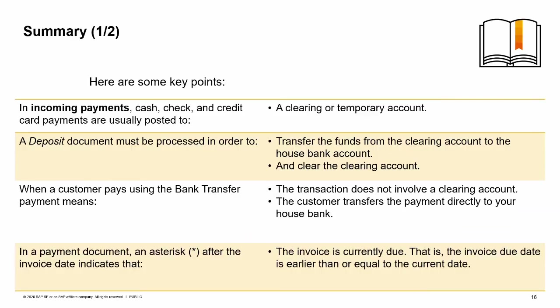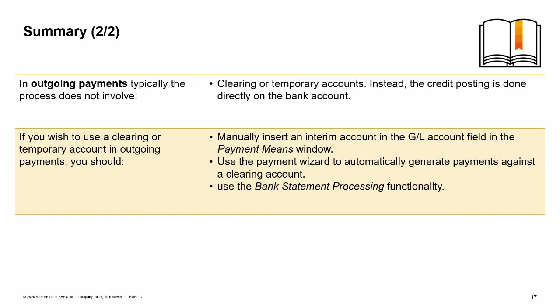Here are some key points to take away. In incoming payments involving cash, check, and credit card, payments are usually posted to a clearing or temporary account, and a deposit document must be processed to transfer the funds from the clearing account to the house bank account and clear the clearing account. When a customer pays using bank transfer, the transaction does not involve a clearing account — the customer transfers the payment directly to your house bank. In a payment document, an asterisk after the invoice date indicates the invoice is currently due. In outgoing payments, typically the process does not involve clearing or temporary accounts — the credit posting is done directly on the bank account. If you wish to use a clearing or temporary account in outgoing payments, you can do this in three ways: manually insert an interim account in the GL account field in the payment means window, use the payment wizard to automatically generate payments against a clearing account, or use the bank statement processing functionality.